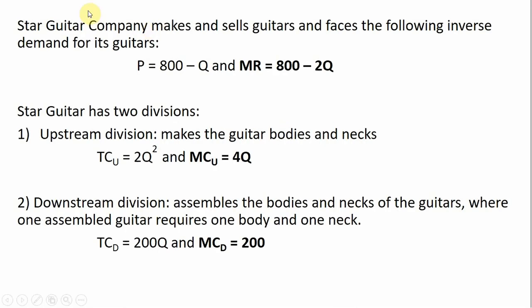In this video, we're going to look at the economics of transfer pricing. We have a company, Star Guitar, that makes and sells guitars and faces the following inverse demand for its guitars: price equals 800 minus Q, where marginal revenue is just the inverse demand with a slope twice as steep, so marginal revenue is 800 minus 2Q.